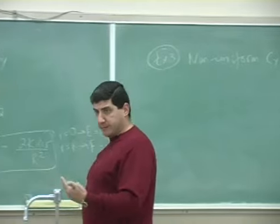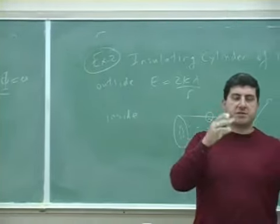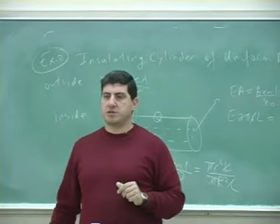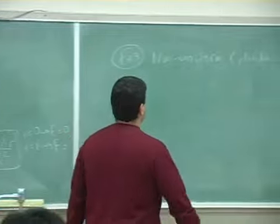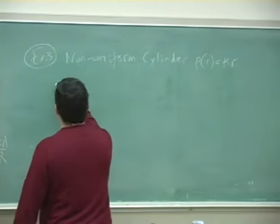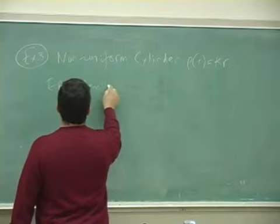Okay, this one I'm going a little bit faster over because once I did the sphere, I'm just transferring over the same steps to the cylinders. So again, I'm gonna have EA is equal to q enclosed over ε0.